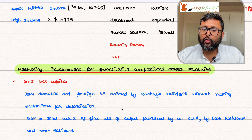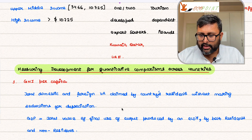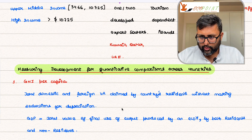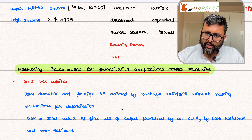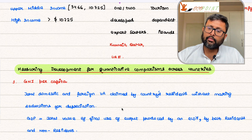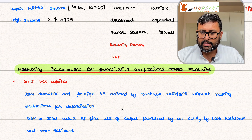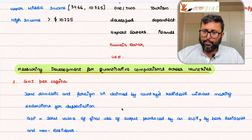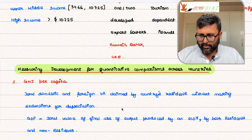How do you measure development for quantitative comparisons across countries? One way is GNP per capita comparison. From national income accounting, GDP plus net factor income from abroad (NFIA) equals GNP. GDP represents the market value of all output produced by people living in a country — whether resident or non-resident — in a given year.